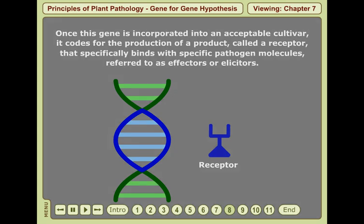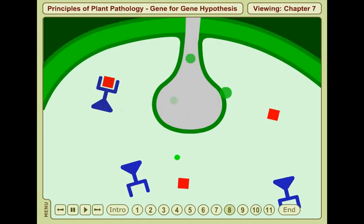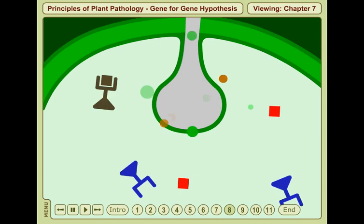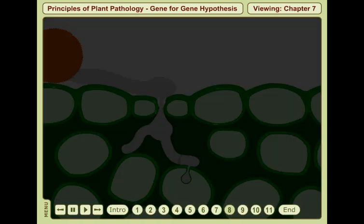When the receptor and effector bind, a cascade of events occurs that leads to rapid cell death. This incompatible interaction is known as a hypersensitive response.